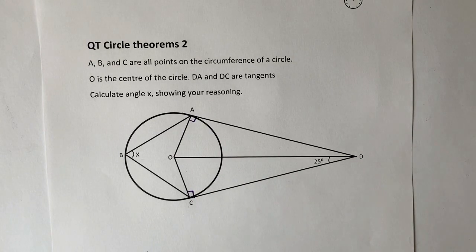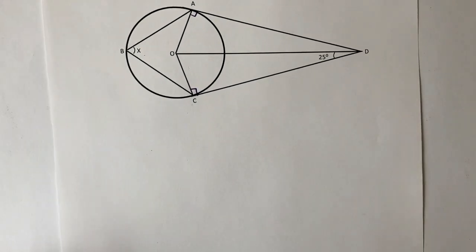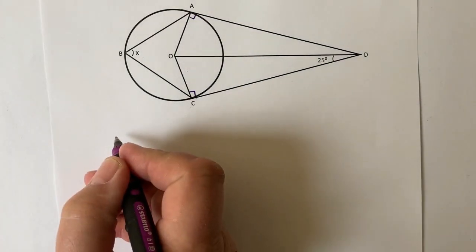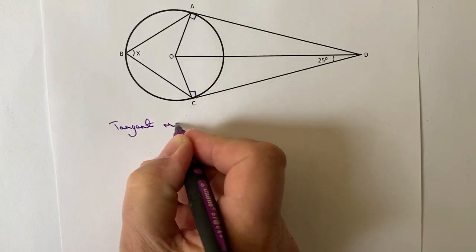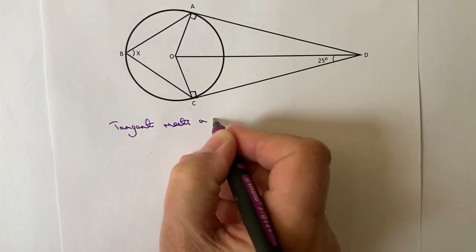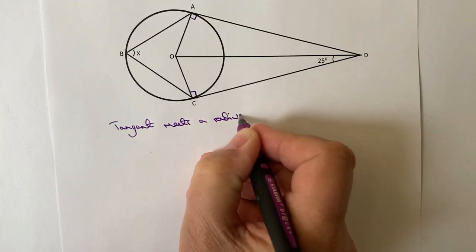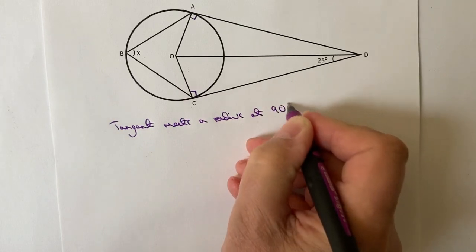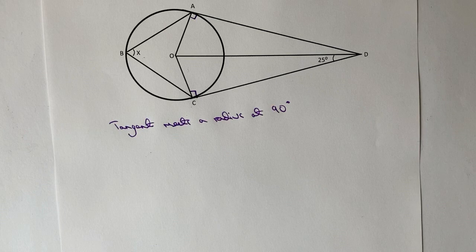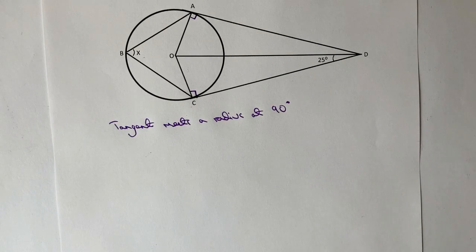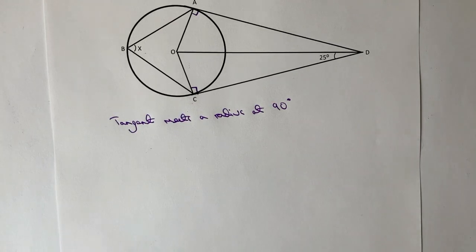Okay, so that's the first thing I'm going to say about that, so we can say then that a tangent meets a radius at 90 degrees. Now apologies for my writing, it's not the greatest writing in the world I'm afraid, but hopefully it will get the message across.